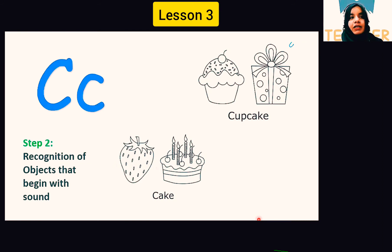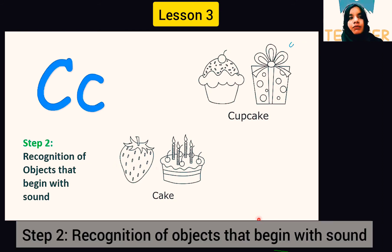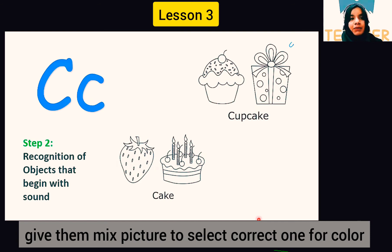Step two: recognition of objects that begin with the C sound. Give two pictures and ask them to color the correct one. For example, C is for cake.